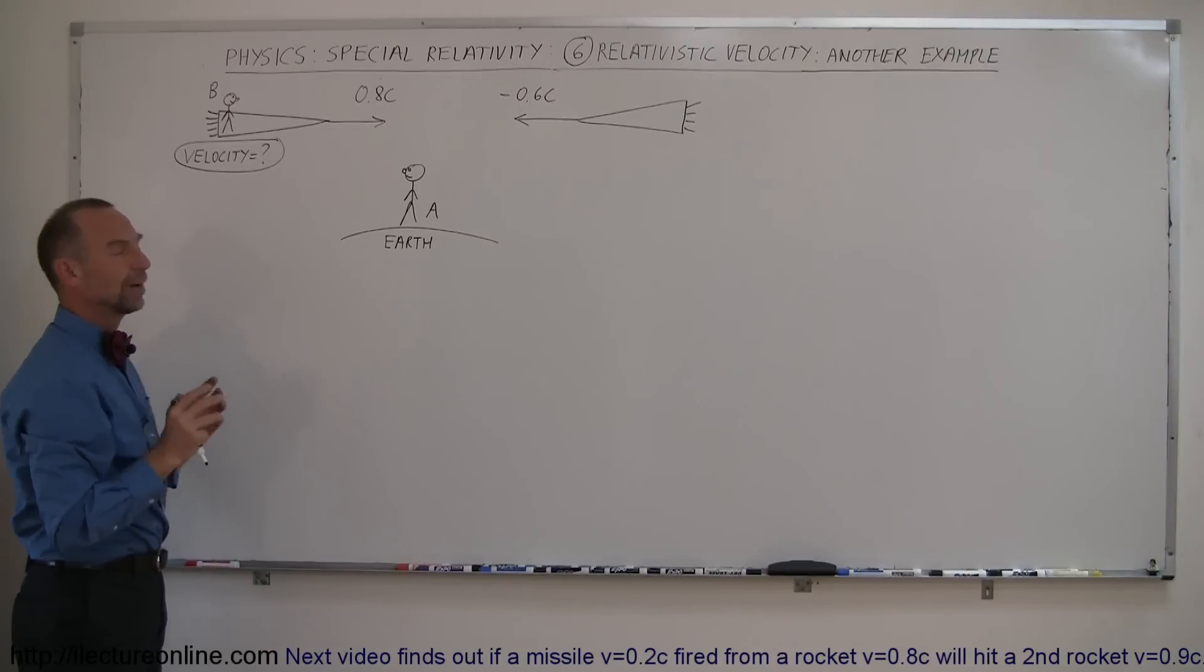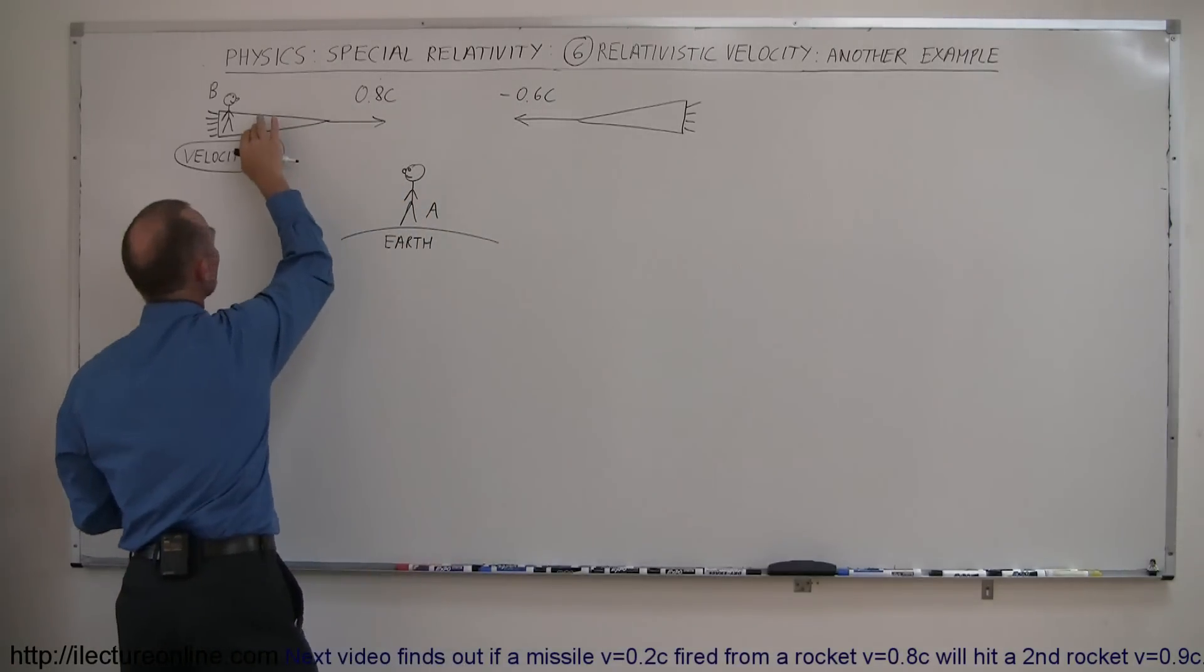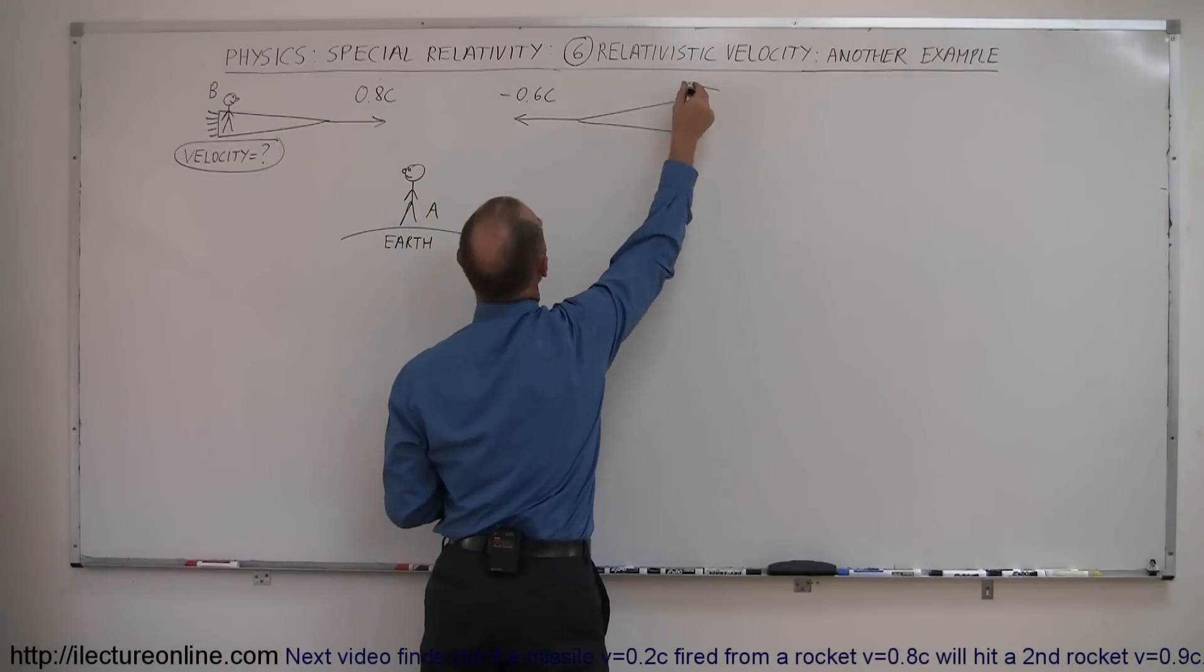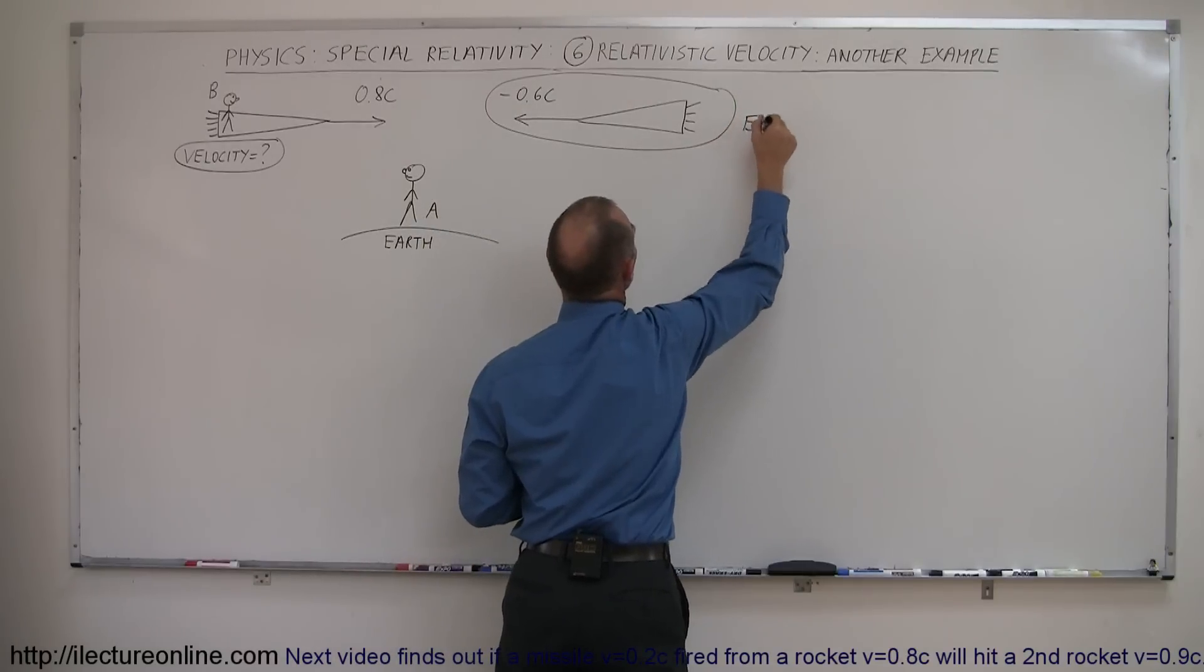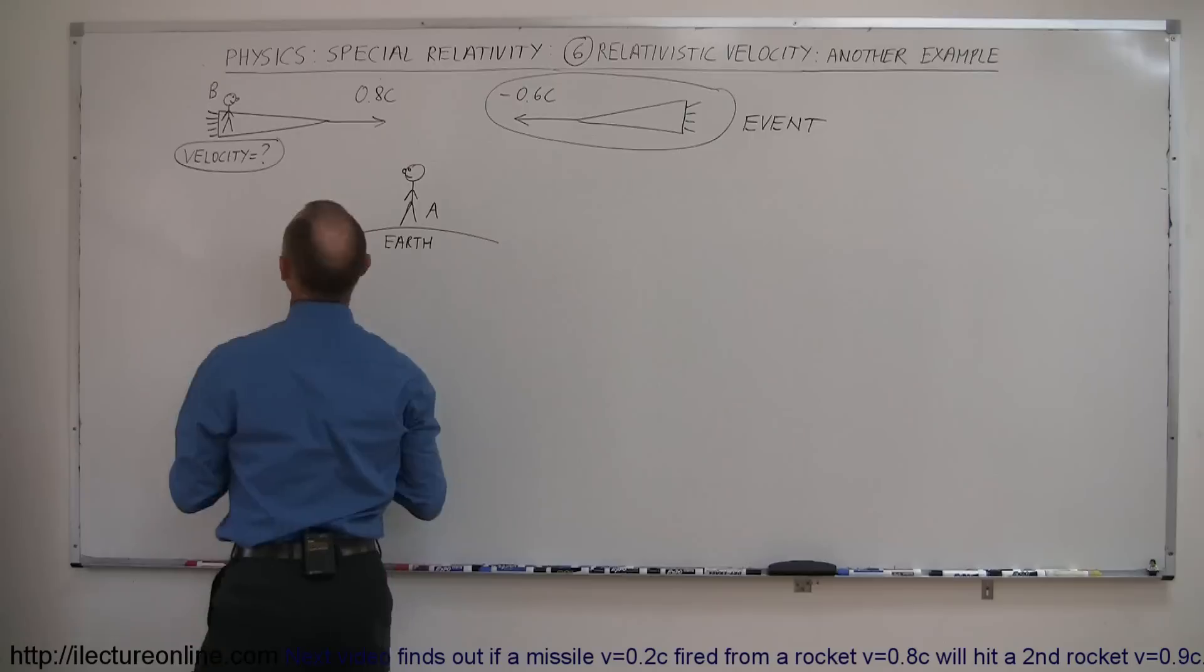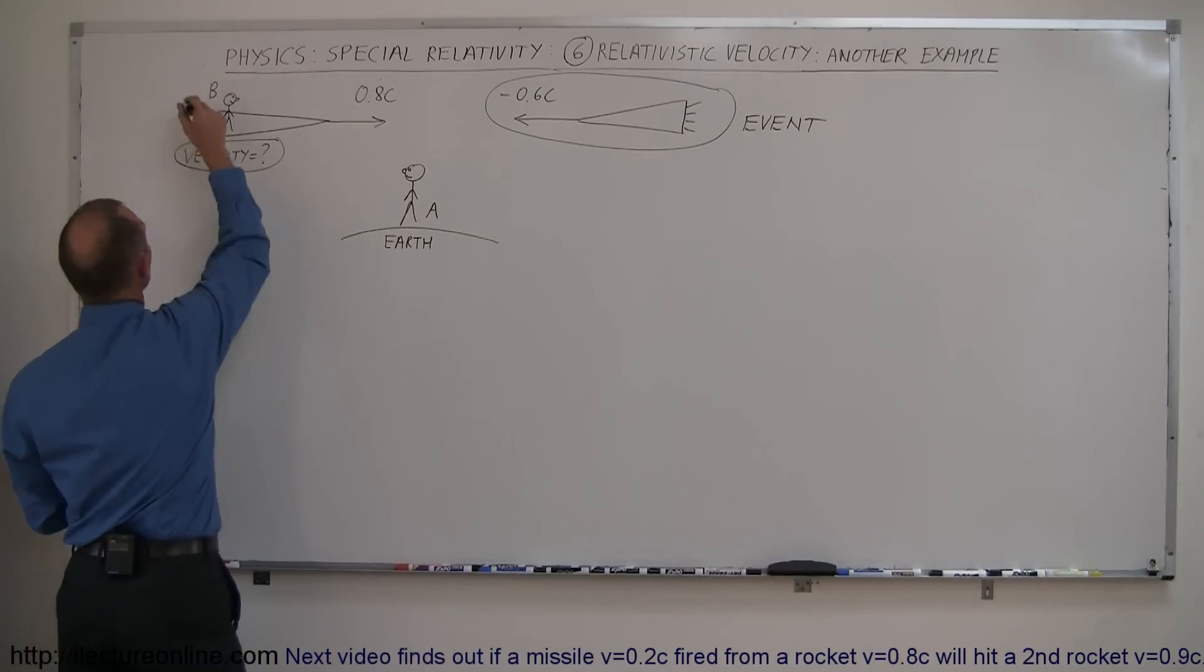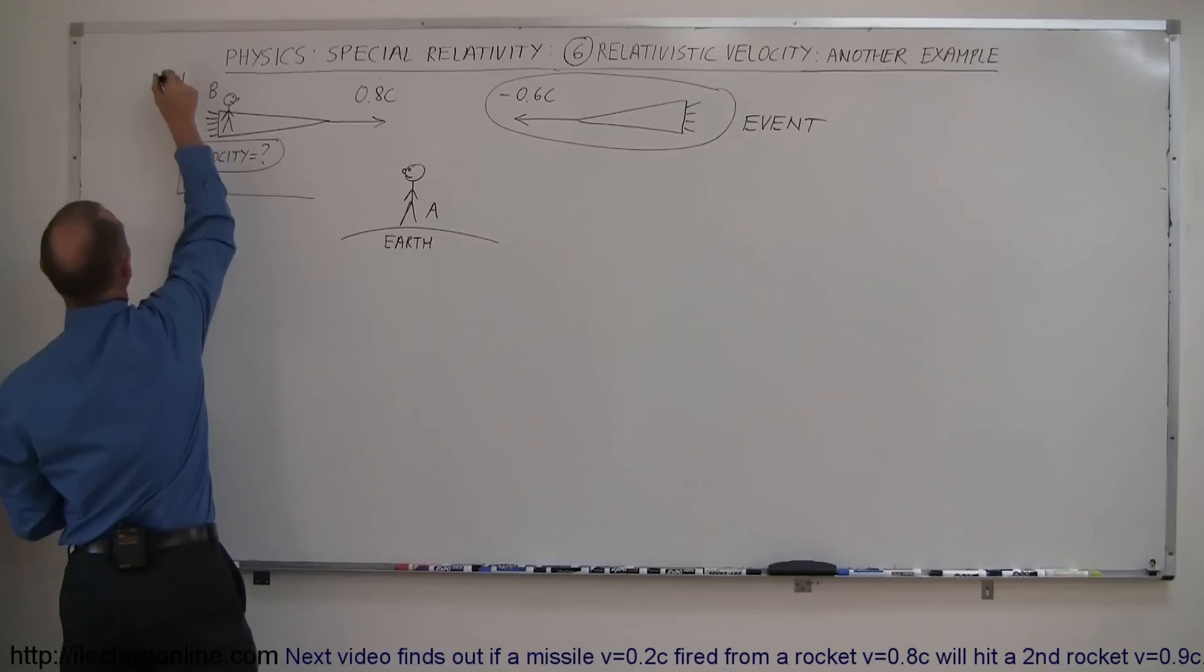Since we're asking how fast this spaceship is moving relative to this spaceship, let's make this spaceship the event. And since this observer is on a moving reference frame, let's call that the moving reference frame, S'.